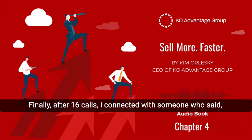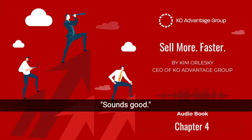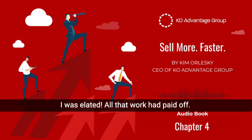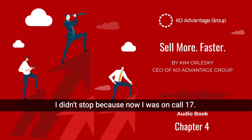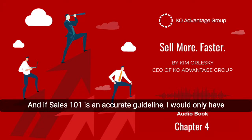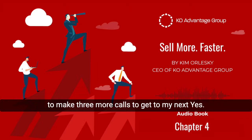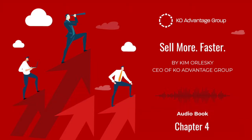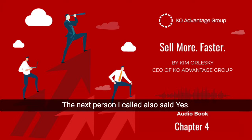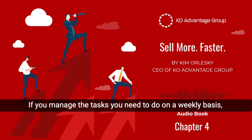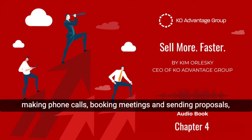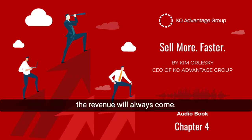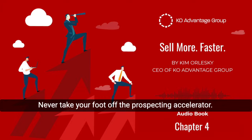Finally, after 16 calls, I connected with someone who said, 'Sounds good, looking forward to meeting.' I was elated. All that work had paid off. But what did I do next? I didn't stop. Because now I was on call 17, and if Sales 101 is an accurate guideline, I would only have to make three more calls to get to my next yes. I didn't have to make three more — the next person I called also said yes. I was now officially done for the day. If you manage the tasks you need to do on a weekly basis — making phone calls, booking meetings, and sending proposals — the revenue will always come. Never take your foot off the prospecting accelerator.